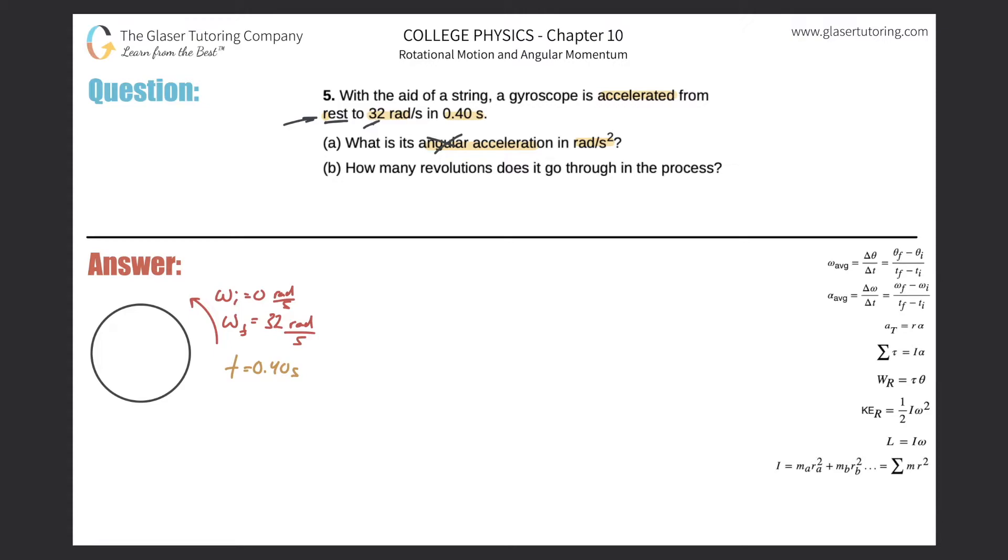We know the initial velocity is zero, the final velocity is 32, the time was 0.4 seconds, and they're asking us to find the acceleration. So I need to know what equation of kinematics relates those variables.